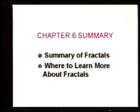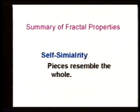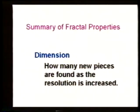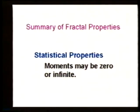In summary of the talk about fractals: fractals are self-similar — they have small pieces that resemble the whole. For mathematical fractals, they resemble exactly; for our fractals in biology, they resemble in a statistical sense. We have scaling, because as we go to different scales, we measure different things — the value measured for a moment or statistical property will depend on the resolution at which it's measured. We have the property of dimension, which quantifies how many new pieces appear as the resolution is changed. And we have the statistical properties of fractals: the moments may not exist, or they may tend to 0 or infinity.